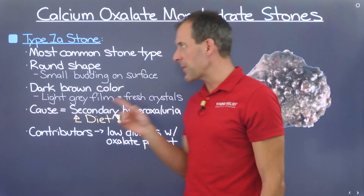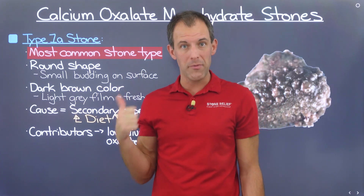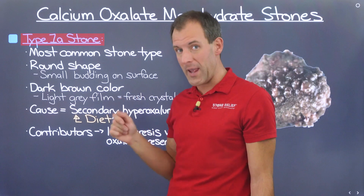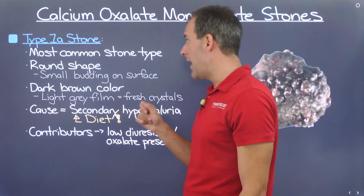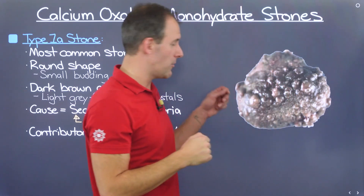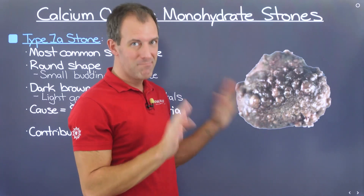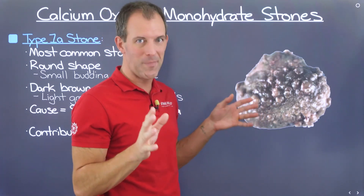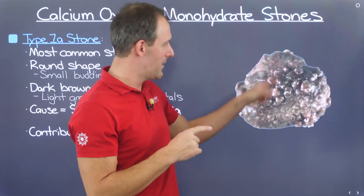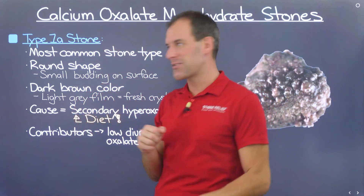The first place we're going to start is with the most common type of kidney stone — the type 1A stone. This is the most common type of kidney stone, and if you're watching this video, this one may look familiar, because 80% of the population forms this stone type.